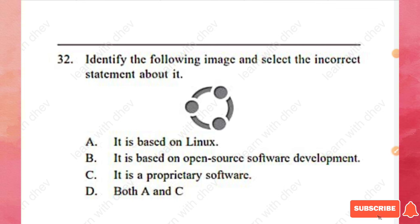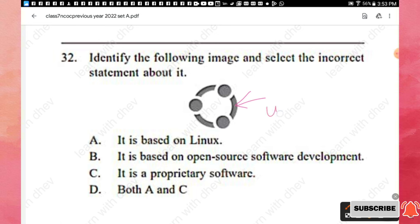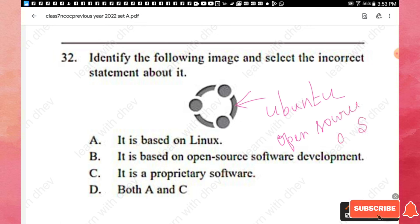Question 32: Identify the following image and select the incorrect statement about it. The given image is the Ubuntu icon. Ubuntu is a free and open-source operating system based on Linux. It is based on open-source software development, but it is not proprietary software. The incorrect statement about Ubuntu is option C, which is the right answer.